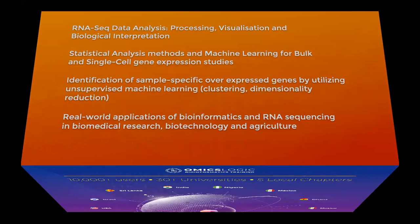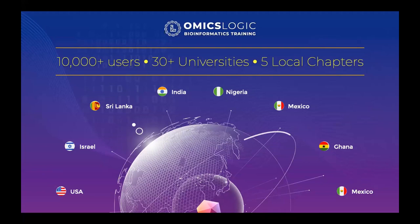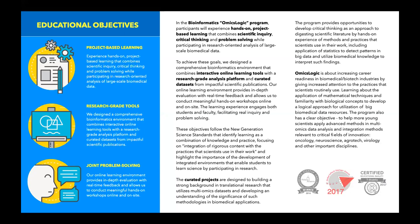OmicsLogic is an international program running in five different regions with over 10,000 users around the world. Our team works with local and regional coordinators to refine local program logistics and leverage online training resources, adapting them to the needs of students and researchers worldwide. OmicsLogic follows a project-based learning approach using research-grade tools to analyze data from top peer-reviewed journals. Training has been completed by over 10,000 participants from 162 countries in over 300 workshops, across six different specialization tracks: oncology, infectious diseases, precision medicine, neuroscience, data science for biomedical data, and comprehensive omics data analysis.